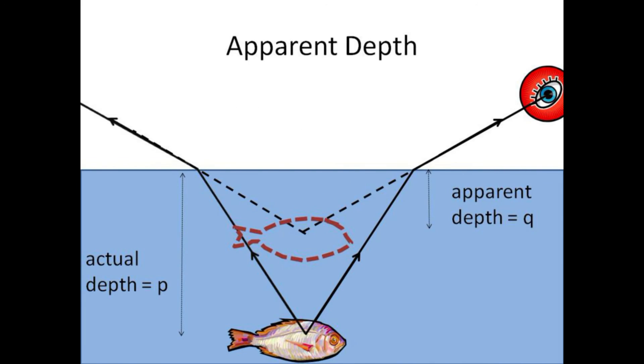When you look at an object located beneath the water, the rays of light from the object are bent away from the normal, and the image appears at a shallower depth called the apparent depth. If you're hunting fish from above the surface using a spear, you'll need to aim deeper than where the fish appears.